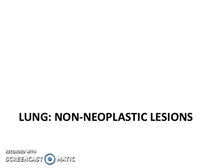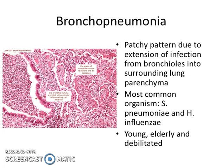Next I will talk about non-neoplastic lesions of the lung. One of the most common is pneumonia, which is generally infection of the lung. Morphologically it can be divided into two types: bronchopneumonia and lobar pneumonia. Bronchopneumonia has a patchy pattern because it is due to extension of infection from bronchioles into the surrounding lung parenchyma, so it doesn't involve the whole lung, just some parts.